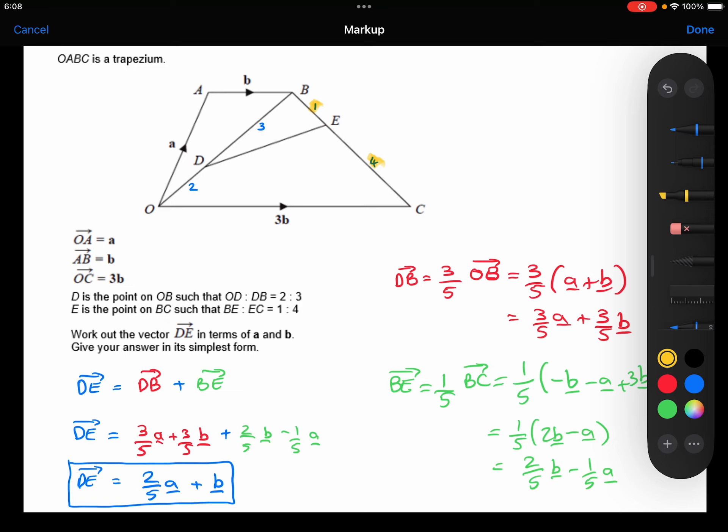We need to work out the vector DE, this vector here, which I'm going to do by going from D to B plus B to E. We need to work out where each of those are, and as you can see, I've worked out DB up here.